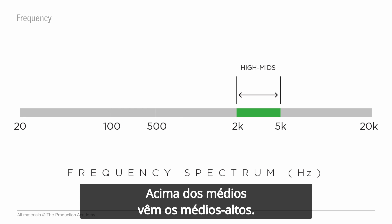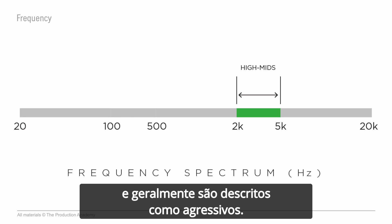Above the mids are the high-mids. These range from 2k to 5k, and generally are the frequencies people call harsh.